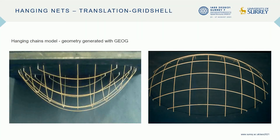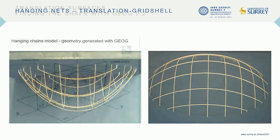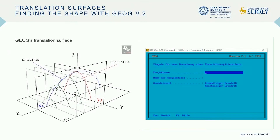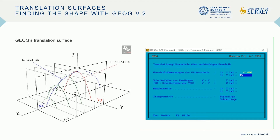During the 80s, I worked at the IL under Professor Friotto's guidance, where I proposed a new form-finding process using analytical geometry and translation surfaces. I also developed the parametric program GEOG, which automatically generates a translation surface geometry with catenaries.